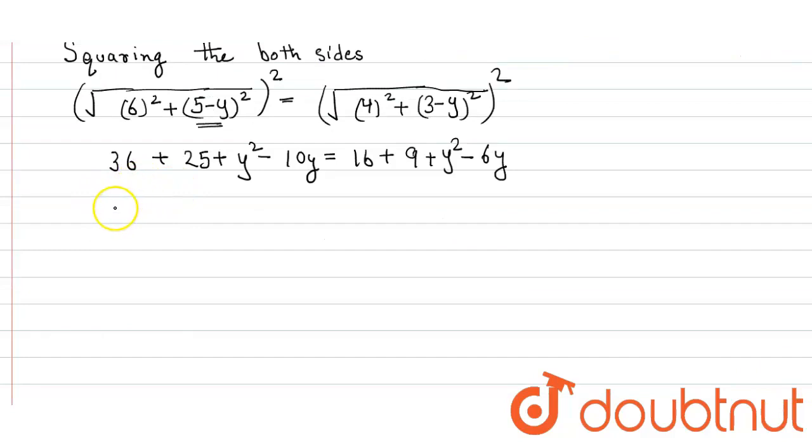Here when we further simplify it, we get 36 and then 36 minus 16, which will give 20, plus 25 minus 9. This y square will simply cancel out. This 5 square will cancel out, and further we here on the left-hand side get 10y minus 6y.